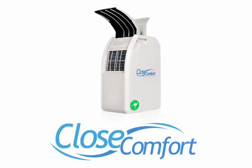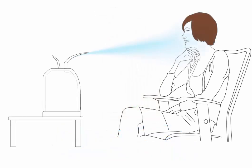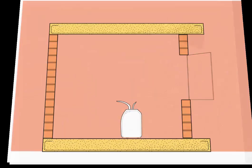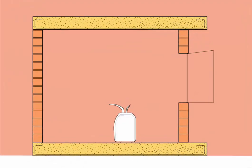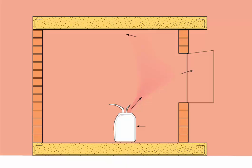For daytime use, just arrange Close Comfort so the cool air flows past your head and shoulders. It works just the same and produces a gentle flow of cool air when you need it. Close Comfort is light and on wheels, so it can easily be moved anywhere you need to feel cool during the day.